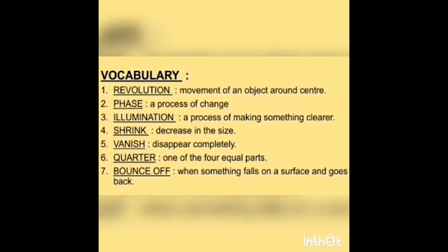First is revolution — movement of an object around the center. For example, the earth moves around the sun, that means the earth revolves around the sun. Second, phase — a process of change. For example, the moon changes its shape regularly. Third, illumination — a process of making something clearer. For example, when sunlight falls on the moon, it gets illuminated.